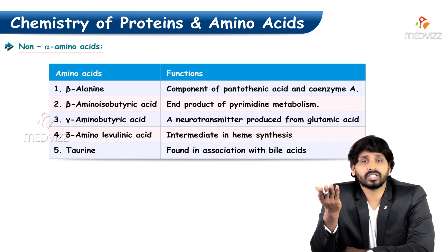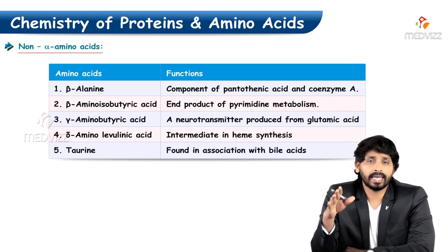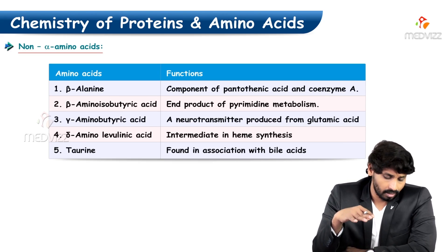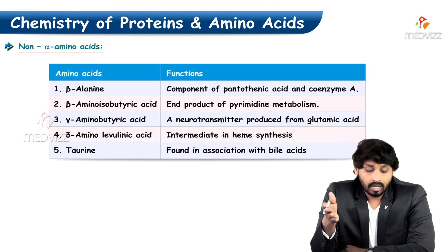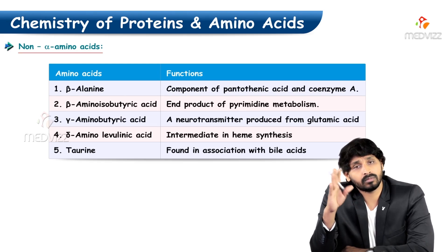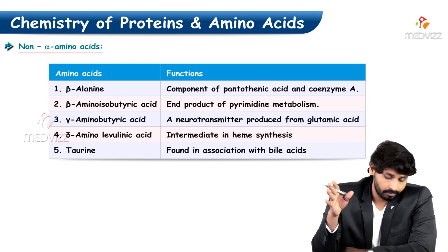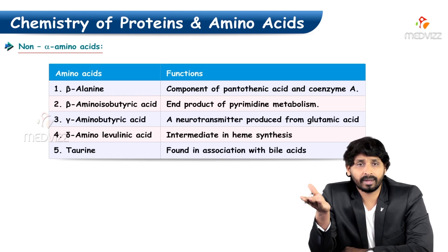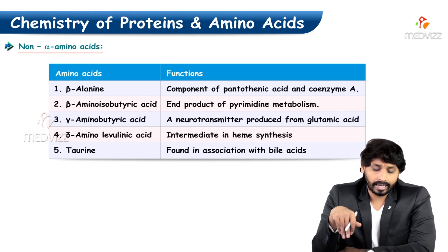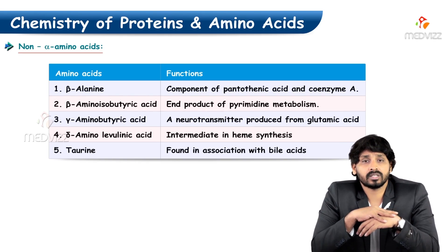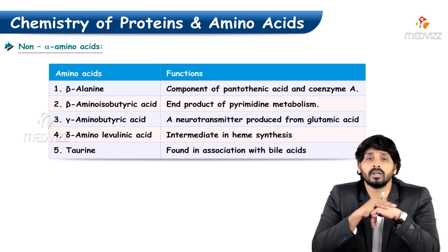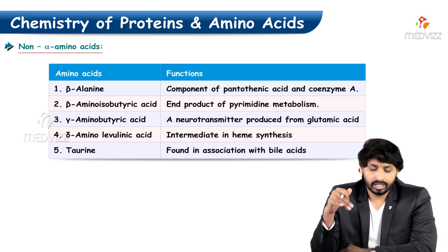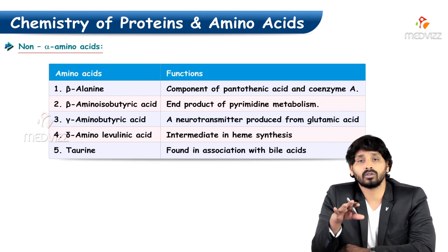Beta-alanine is a component of pantothenic acid and coenzyme A. Pantothenic acid is the B-complex vitamin B5. Beta-aminoisobutyric acid is an end product of pyrimidine (nucleotide) metabolism. Gamma-aminobutyric acid, GABA, is an inhibitory neurotransmitter produced from glutamic acid. Gamma-aminolevulinic acid is an intermediate in heme synthesis, playing a major role in the formation of heme in red blood cells. Taurine is found in association with bile acids — taurocholic acid and taurochenodeoxycholic acid — and bile acids are required for emulsification.